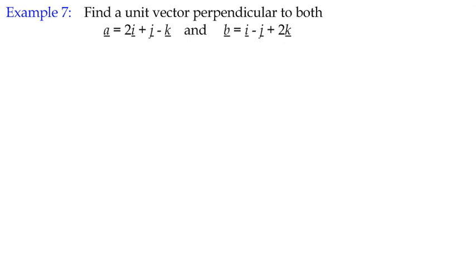It says find a unit vector perpendicular to both vectors A and B. Well, we know that if we have two vectors A and B, that if we find a vector product, that will give us a vector which is perpendicular to both of those vectors. So the first thing that we can do is find a vector that's perpendicular to both A and B. It's not necessarily going to be a unit vector, but the first thing we can do is to find A cross B, the vector product.